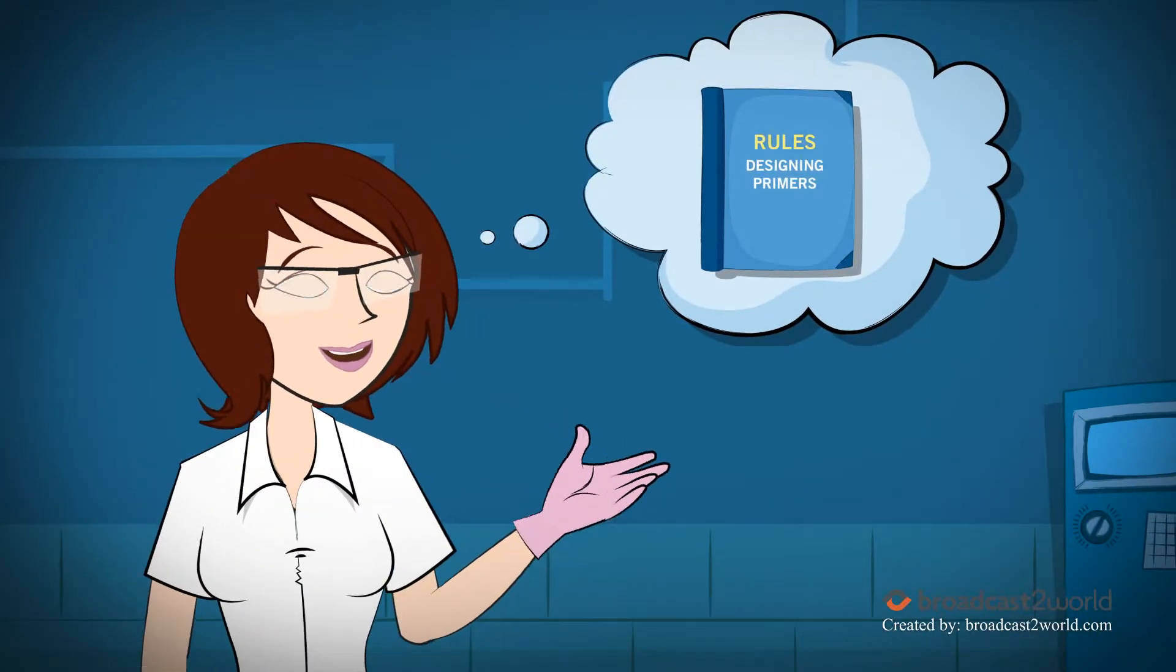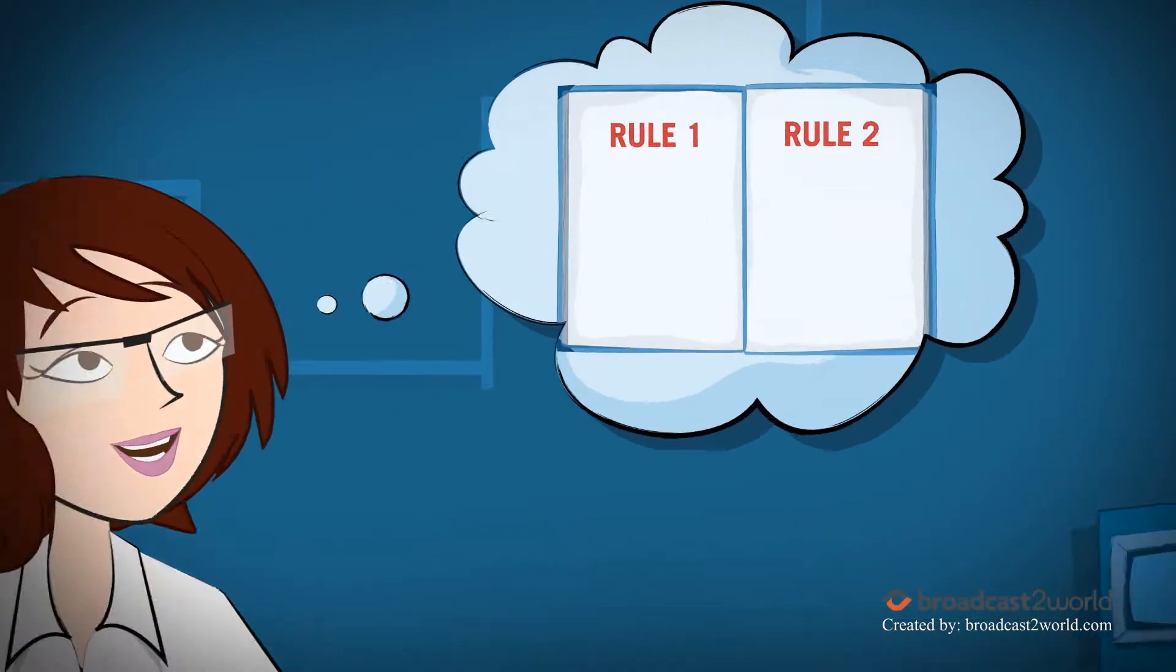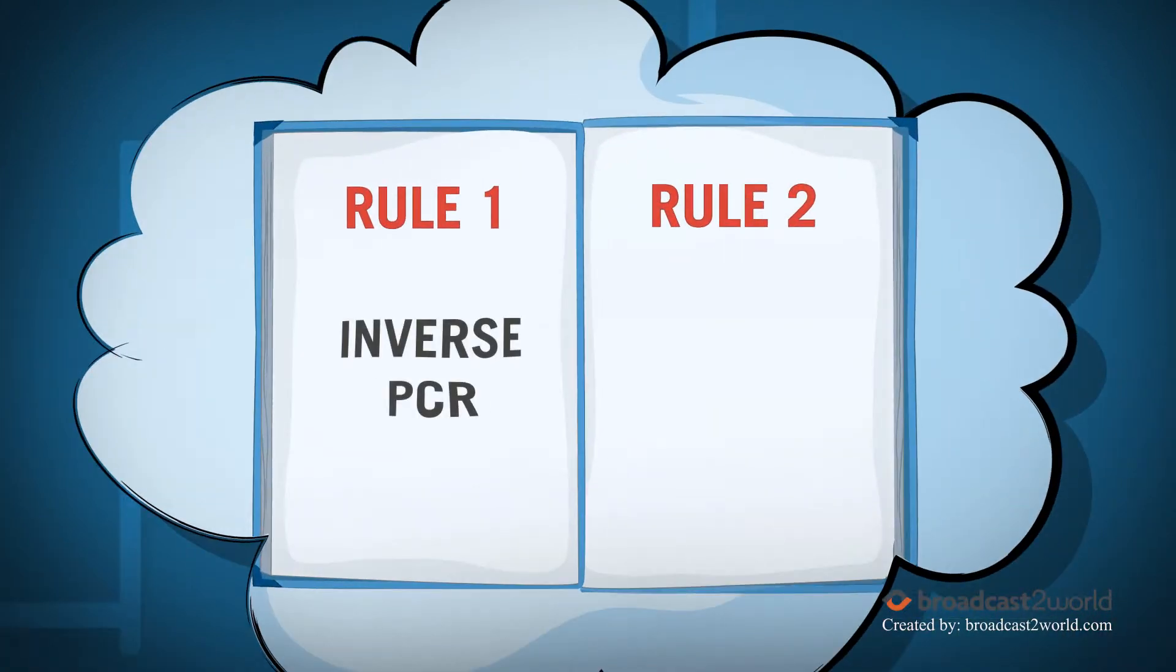Yumi remembers that designing primers for Infusion mutagenesis has two basic rules: primers should be designed for inverse PCR and should share a 15 base pair overlapping region.